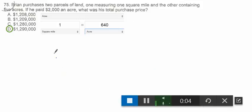Okay, so Brian purchases two parcels of land, one measuring a square mile and the other five acres. If he paid $2,000 an acre, what's the total purchase price? You need to know how many acres in a square mile. Turns out there's 640. So total acreage purchased...